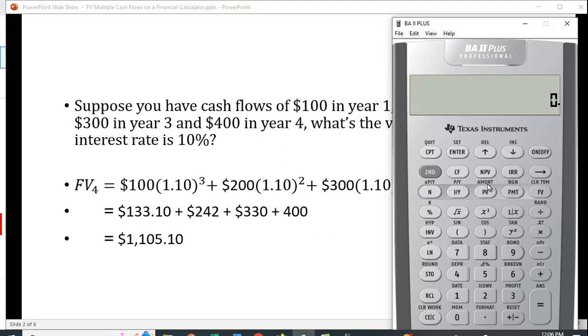Right, I can use the time value of money function keys and let's see, if we have three periods and the interest rate is ten percent and I have a hundred dollar present value then I compute the future value, that's the 133.10. If I change the number of periods to two and the cash flow to 200, the future value is 242. And then we can actually just do this in our head, 300 for the present value and one for the number of periods is 330, and 400. Then we just add them up.